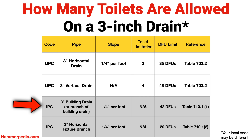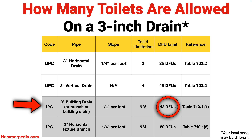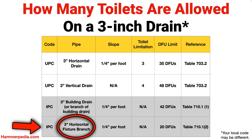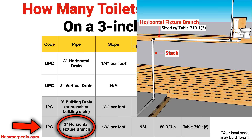The IPC has a different take and doesn't have this same three-toilet limitation. Instead, you're limited to a maximum of 42 DFUs connected to a three inch horizontal pipe sloped at a quarter inch per foot — assuming that pipe is either the building drain, a branch of the building drain, or the building sewer. If the pipe is a horizontal branch connecting to a stack, you're limited to 20 DFUs on a three inch pipe.